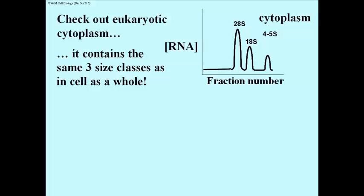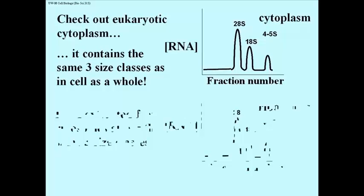And if you take the cytoplasmic RNA, independent of the nucleus, free of the nucleus, it has the same three size classes as the cell as a whole. What that means is the cytoplasm contains largely these three size classes of RNA.